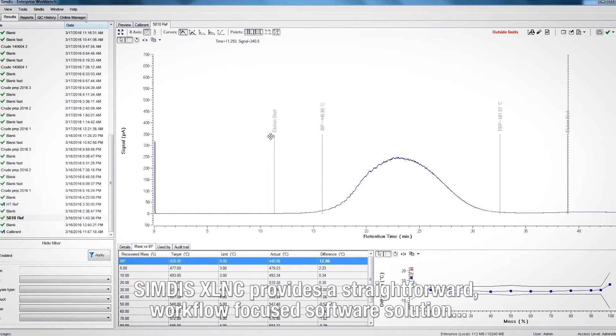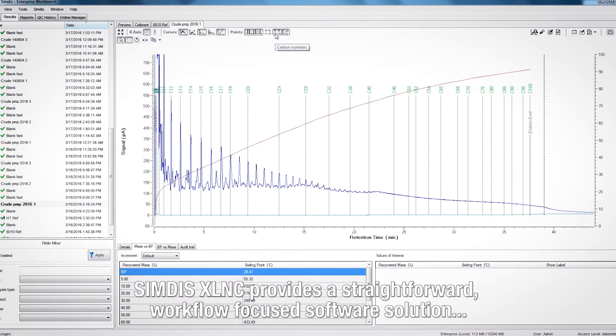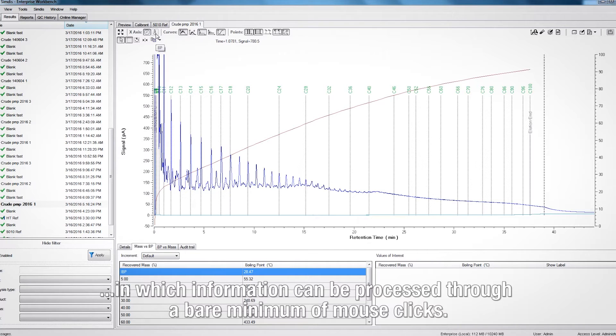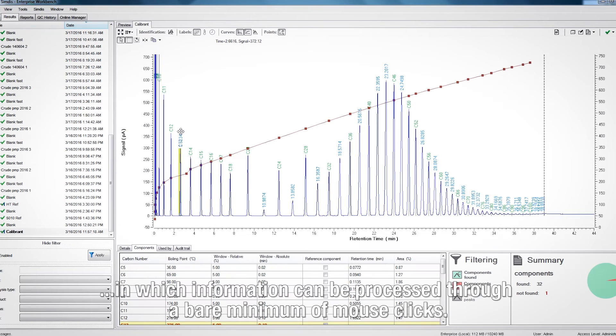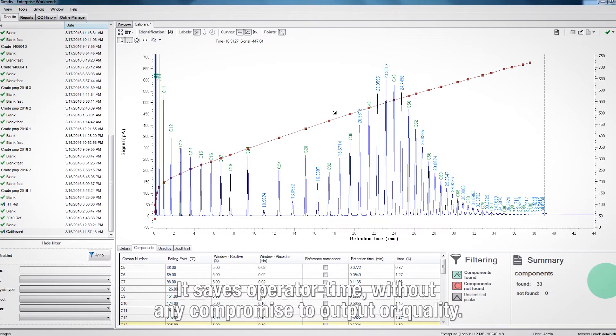SIMDIS Excellence provides a straightforward workflow-focused software solution in which information can be processed through a bare minimum of mouse clicks. It saves operator time without any compromise to output or quality.